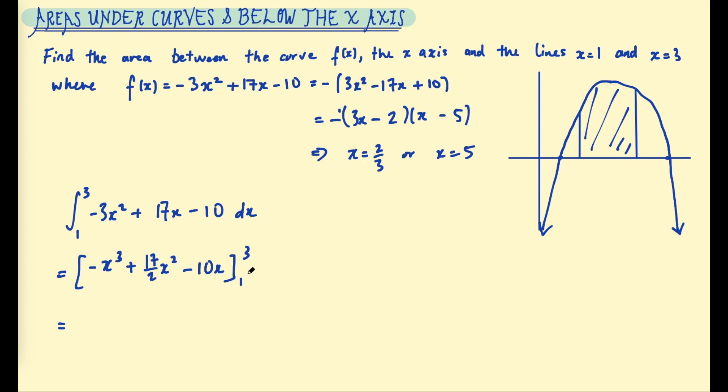Then we plug in 3 and we subtract when we plug in 1. So 3 cubed, that's negative 27, plus 17/2 multiplied by 9, and then take 30. Then plugging in 1, we get negative 1 plus 17/2, take 10.